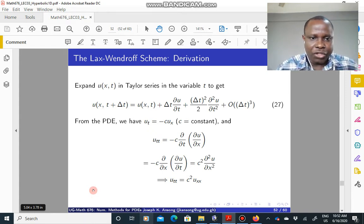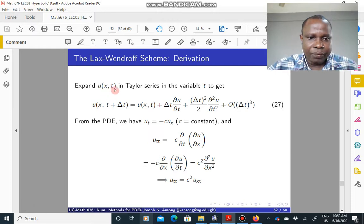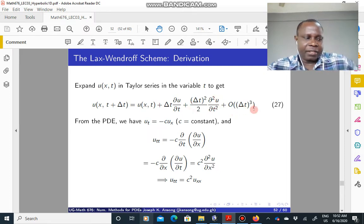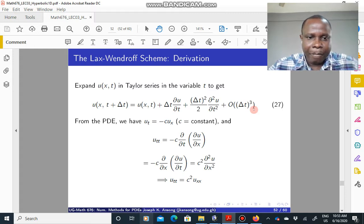How do you derive it? So all you do is that you expand u in the variable t. So you're going to expand this. If you expand this Taylor series expansion, you get this delta t du/dt plus, of course, delta t squared over 2, and then the second derivative d²u/dt² plus all that delta t cubed terms.